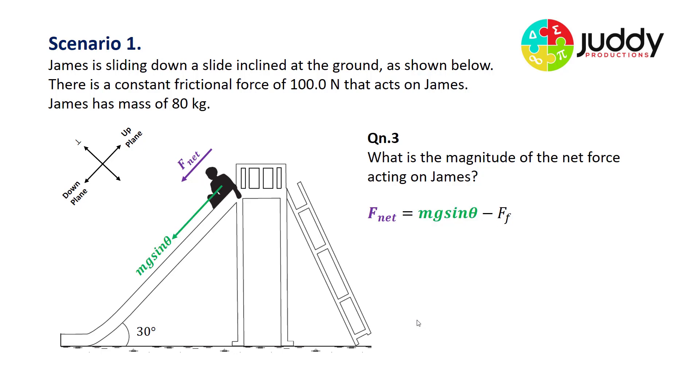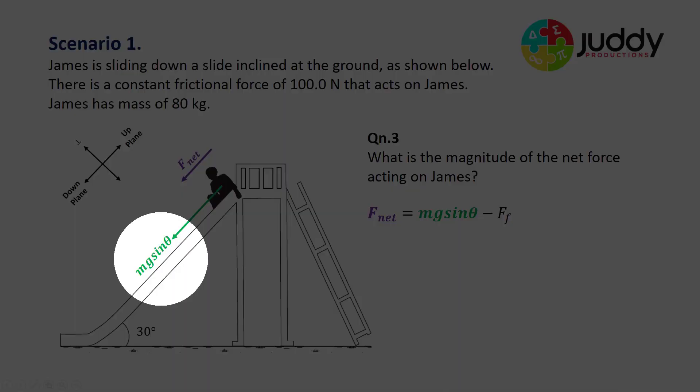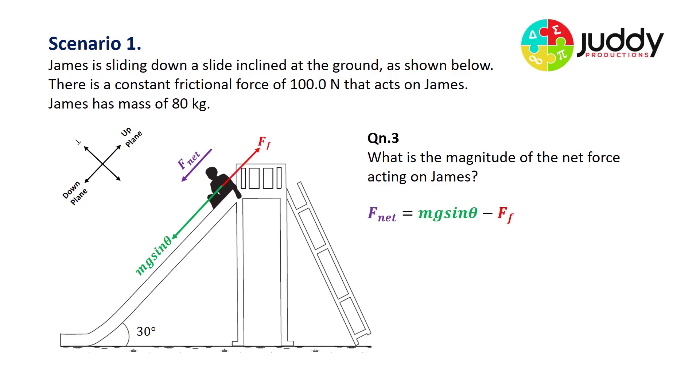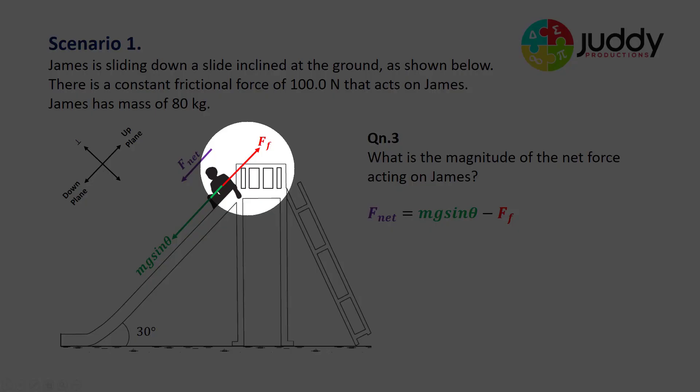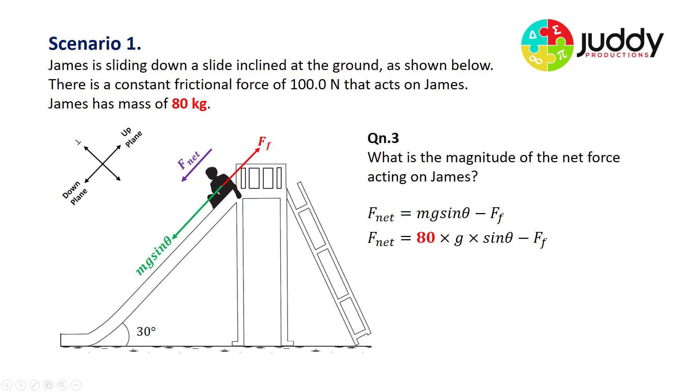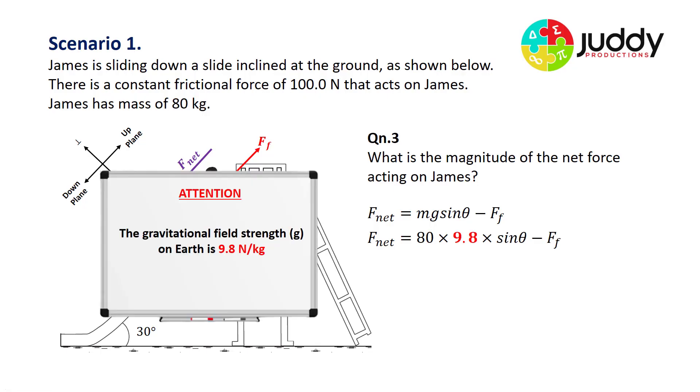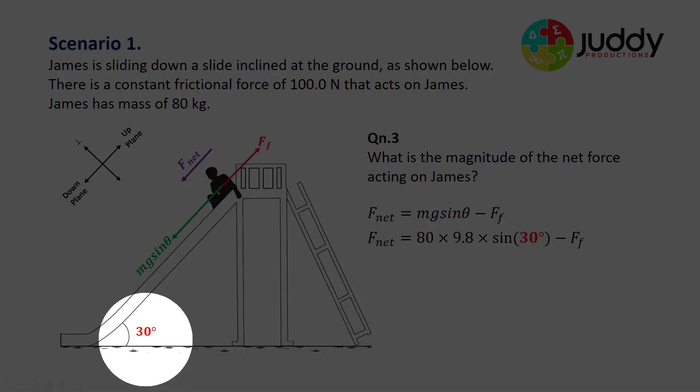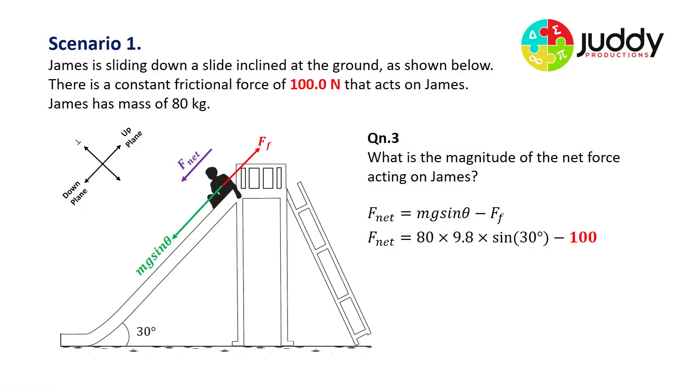The driving force down the plane equals mg sin theta, which is the component of James's weight force acting down the plane. Opposing that is the frictional force Ff. So the net force equals mg sin theta take Ff. Submitting our values: 80 times 9.8 times sine of 30 degrees subtract 100 for the frictional force. Placing all those values together, we end up with 392 take 100, which is 292 newtons down the plane.